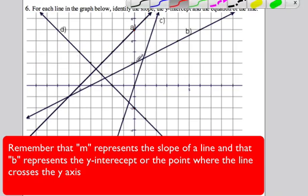For b, we have a y-intercept at 2, so our b equals 2.